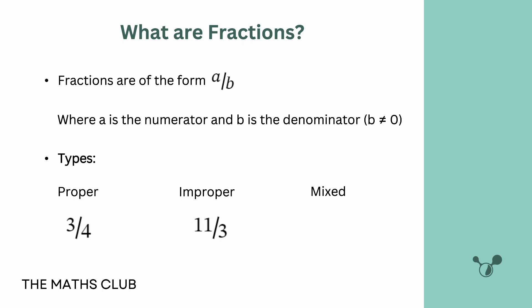Then we have another type called a mixed fraction. What is a mixed fraction? You're seeing a whole number — like 3 — and then a fraction, like 2 over 5. So you can see it's mixed: there is a whole number part, 3, and a fraction part, 2 over 5.